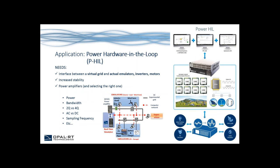The third application is power hardware-in-the-loop, involving an interface between a virtual grid and actual emulators, inverters, and motors. This requires increased stability due to power amplifiers in the loop. Selecting the right power amplifier is a key challenge, considering power, bandwidth, two-quadrant versus four-quadrant, AC versus DC, and sampling frequency. Opal RT works with various third-party amplifier manufacturers to help select the right one. The real-time simulator interfaces with a power amplifier, which connects to wind turbine emulators, PV emulators, grid loads, motors, and inverters.